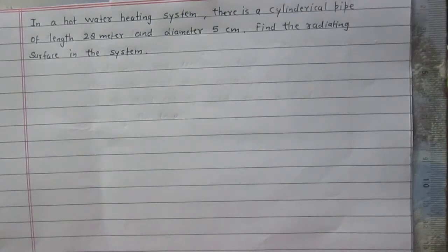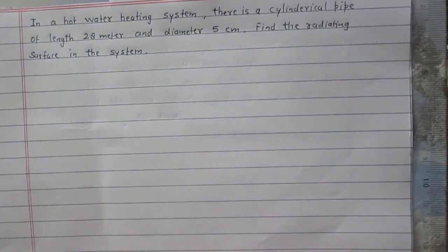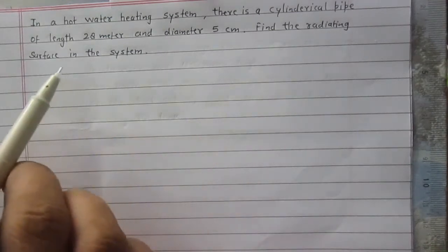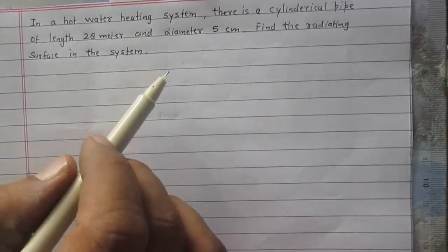Since this system is consisting of a cylindrical pipe and the pipe is opened at its both ends, we will consider only the curved surface area of the pipe. So radiating surface is the curved surface area of this pipe.